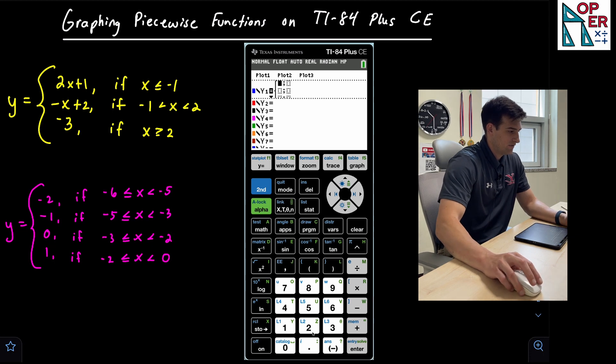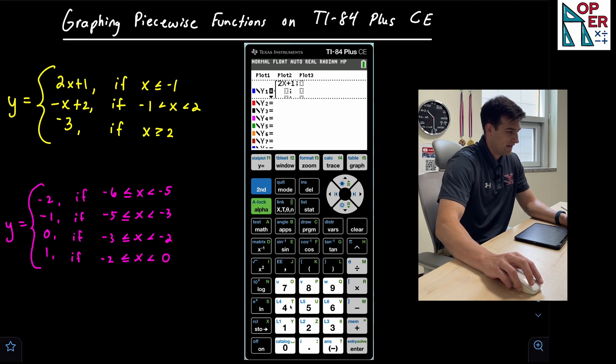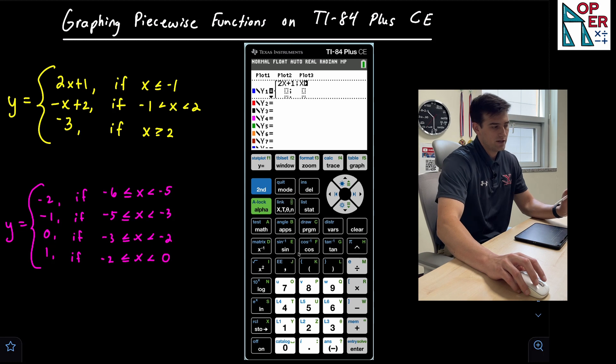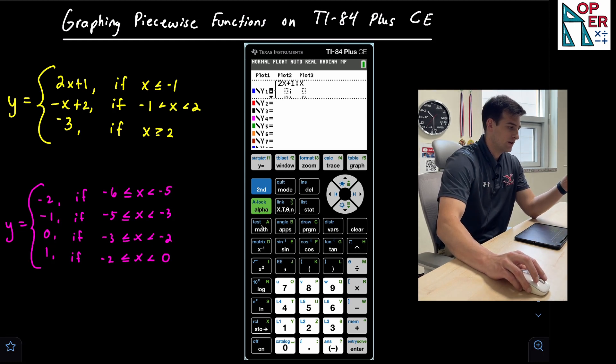So on our first example, we have 2X plus 1. And then we're gonna right arrow key over. And now we have X. So we can use our variable X. And now we're gonna find the inequality symbol. So to do that, we're gonna use test. So we go second math.